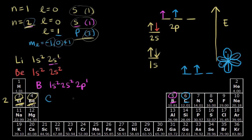So we can write carbon's electron configuration by reading off the orbital notation: one s two, two s two, two p two — two electrons in the p orbitals of the second energy level.